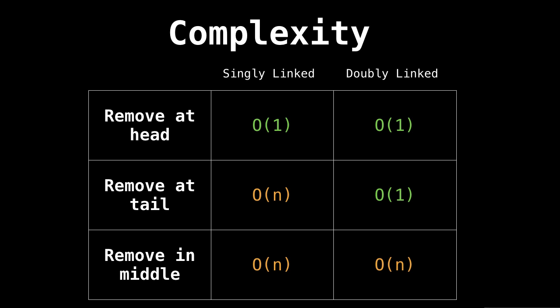And finally, removing somewhere in the middle is also linear time, because in the worst case, we would need to seek through n minus one elements, which is linear.